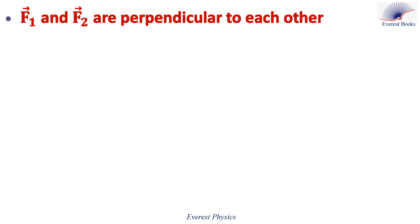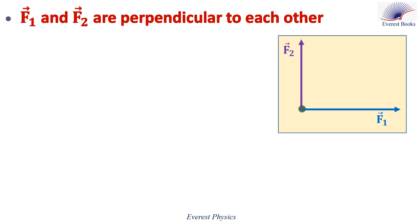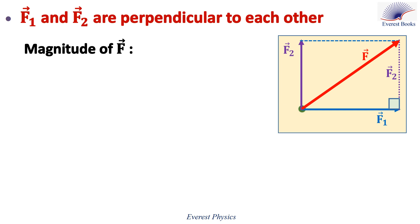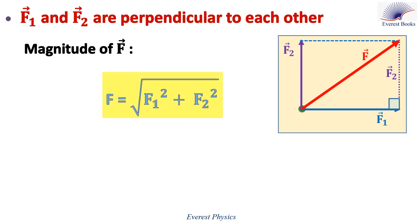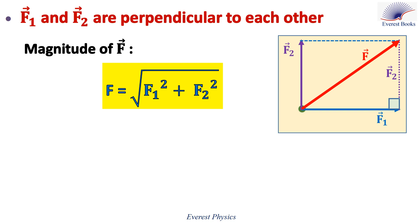Now let's determine the resultant of two vectors perpendicular to each other as shown on the figure. The resultant of the two vectors is confounded with the diagonal of the rectangle constructed with the two vectors as sides. To determine the magnitude of the resultant vector F, the sides F, F1, and F2 form a right-angled triangle. So, using Pythagoras' theorem, the magnitude of the resultant vector F is given by the square root of F1 squared plus F2 squared, where F1 is the magnitude of the first vector and F2 is the magnitude of the second vector.